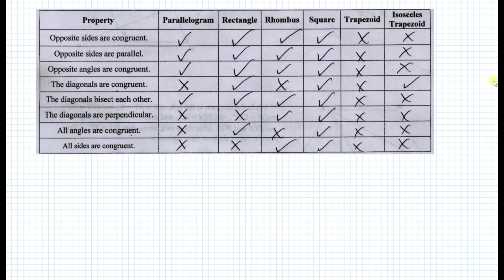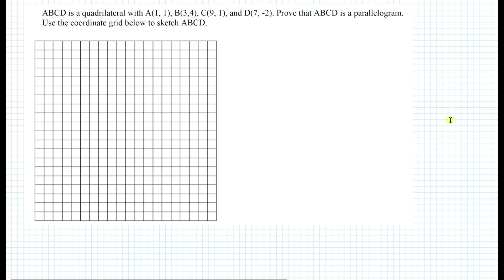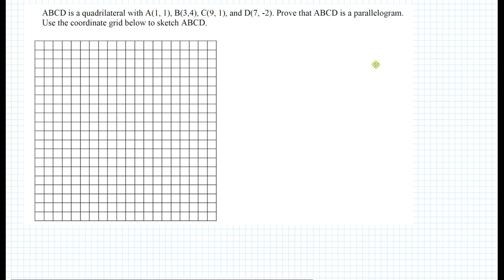For example, if you want to prove that something is a square, you first prove it as a parallelogram, then a rectangle, then a rhombus, and then a square — following the hierarchy of quadrilateral properties. Properties include opposite sides being congruent or diagonals bisecting each other, in which case you'd use the midpoint formula. Here's an example: ABCD is a quadrilateral with given points A, B, C, and D. On the Regents, they give you the grid but you draw the X and Y axis and establish the units yourself. The question asks you to prove that ABCD is a parallelogram, so you would work with slopes.